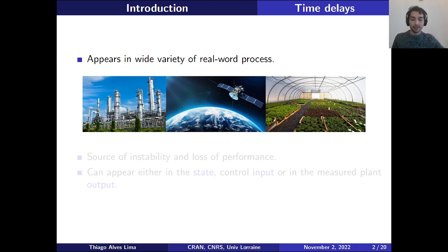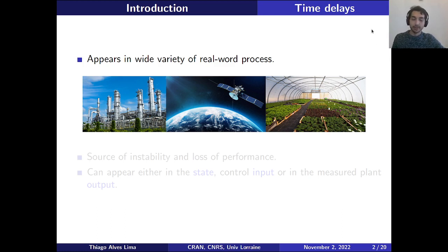First, let me give you a little motivation about time-delay systems. Time delays appear in many physical real-world processes. For example, in the chemical industry it's very common because chemical reactions take a lot of time to happen. Usually in thermal processes — like if you want to heat up or cool down a greenhouse or an incubator — you're probably going to have delays. Delays also appear a lot due to communication delays: if you have a network and need to transmit data, that's going to be delayed as well.